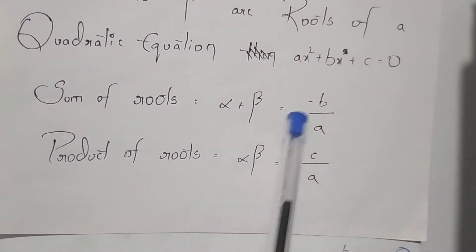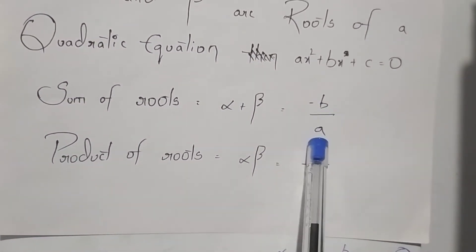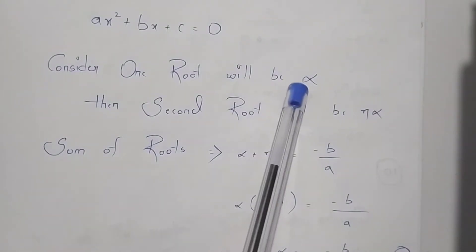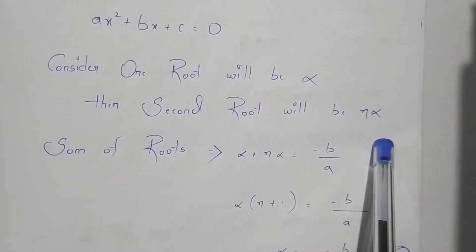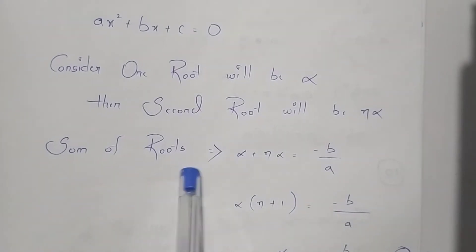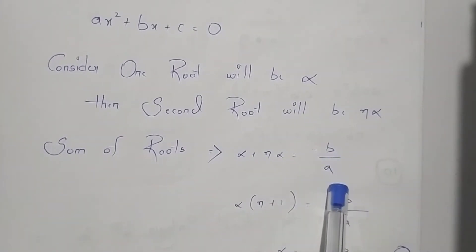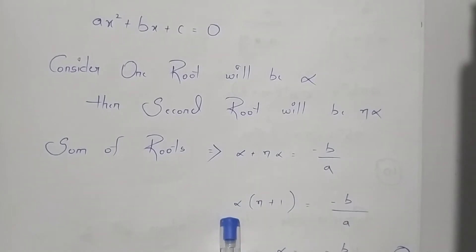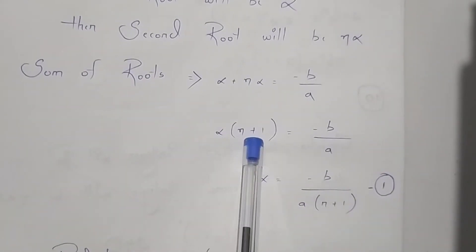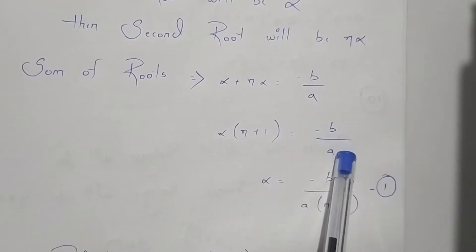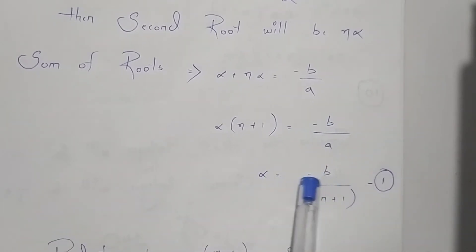The sum of roots is -b/a. In this question the roots are alpha and n·alpha, so the sum is alpha + n·alpha = -b/a. Taking alpha common, we get alpha(n + 1) = -b/a, therefore alpha = -b / [a(n + 1)].